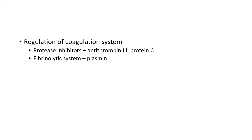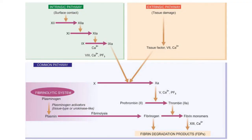The coagulation system is regulated by protease inhibitors — such as antithrombin 3 and protein C — which act on various coagulation factors to oppose thrombin formation. Another regulatory system is the fibrinolytic system: plasminogen present in plasma is activated by plasminogen activator to form plasmin, a potent fibrinolytic enzyme which degrades fibrin.